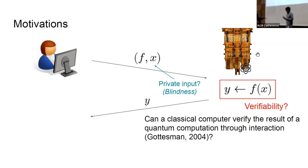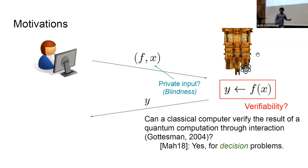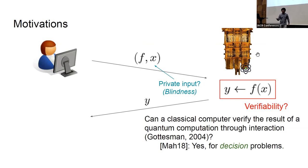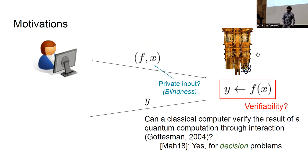There has been a lot of research since then. A lot of earlier work solved this problem under easier settings — for example, allowing the client to have some quantum capabilities, or allowing the use of many different servers. The big breakthrough came only four years ago by Mahadev, who answered this question in the setting of only one fully classical client and only one quantum server. The answer she gives is yes, for decision problems.